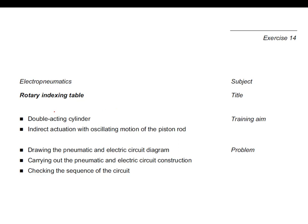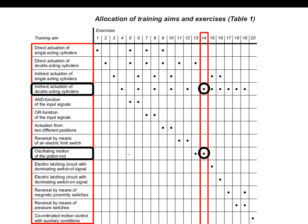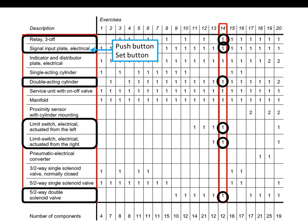From the other pages of the problem description we can identify important details: we need to use a double acting cylinder, we must apply indirect actuation, and the piston must be in oscillating motion. We also need to produce pneumatic and electric circuit diagrams. The training aims highlight what relates to Exercise 14, reiterating indirect actuation with double acting cylinders and oscillating piston motion.